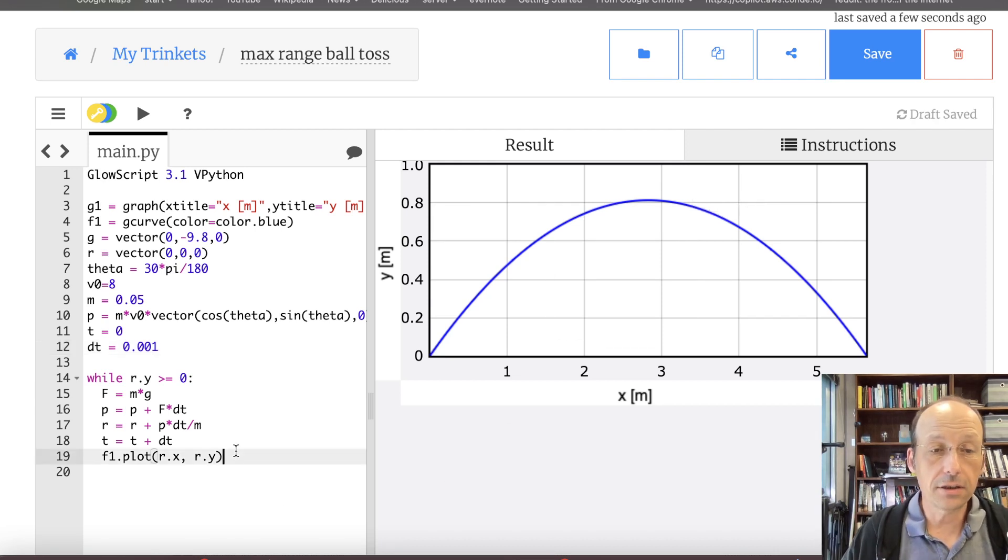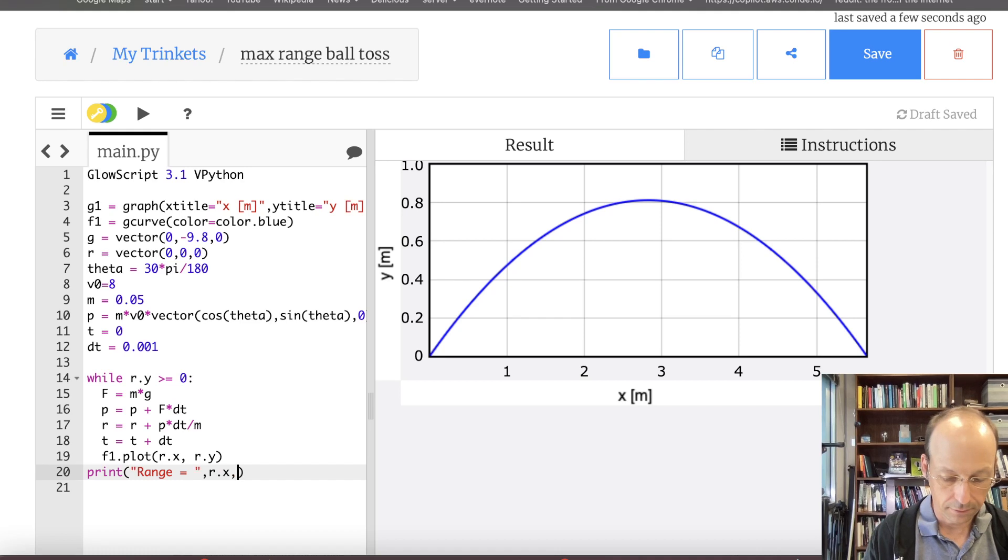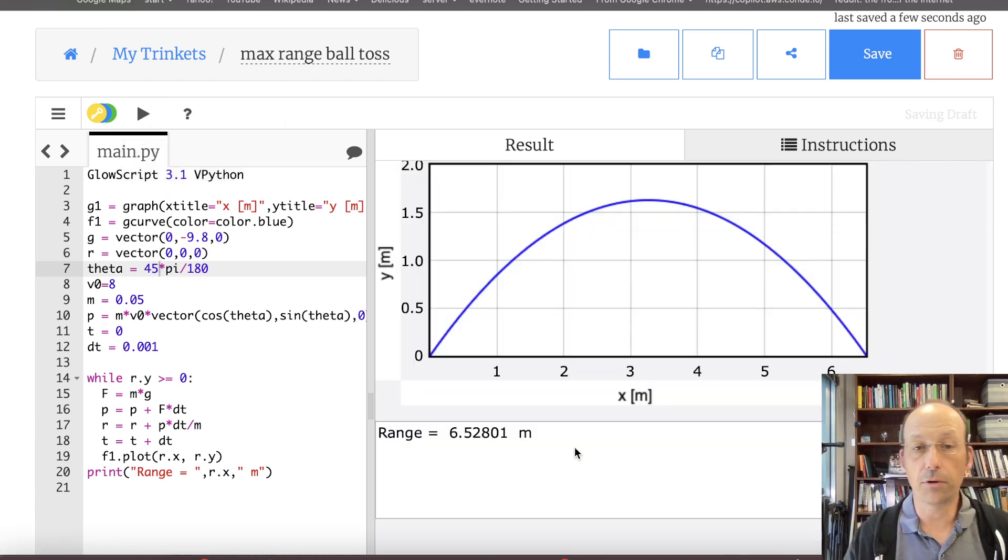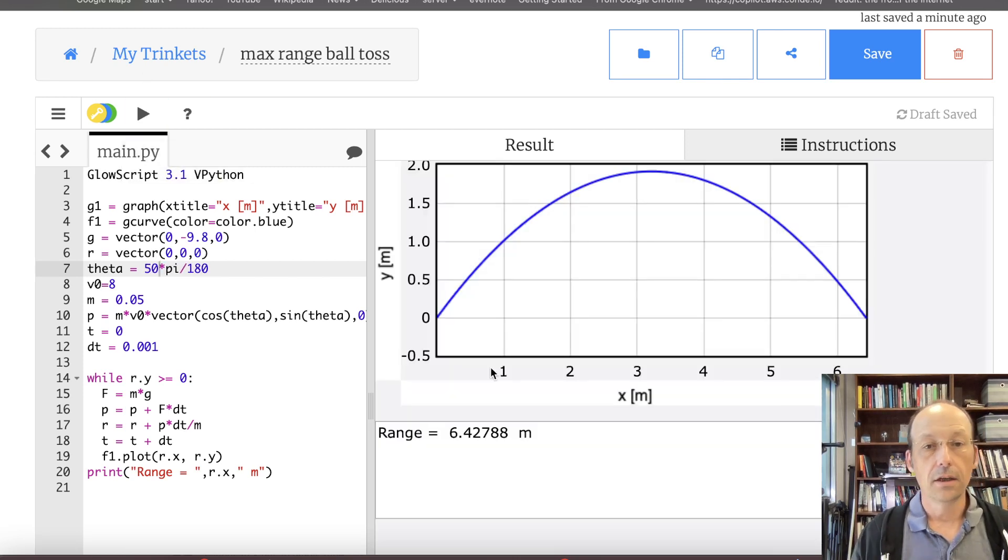Now I could get the range. Since it started at the origin. Let's print Range equals R dot X meters. That's how far it ended up. I get 5.65. Now if I change this angle to let's say forty five, I get 6.52. Now if I change it to fifty, 6.5. Remember that. Let's change this to fifty. So it goes down. So you can see that as I increase my angle, I get the maximum range at forty five, which we already knew.